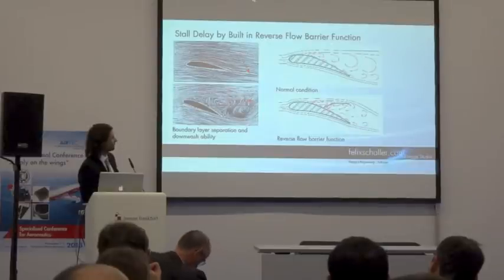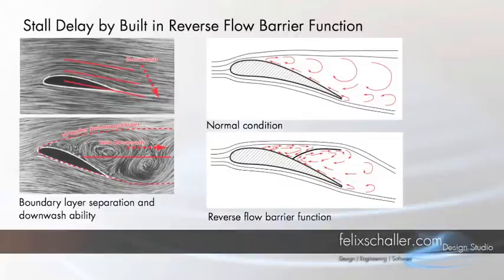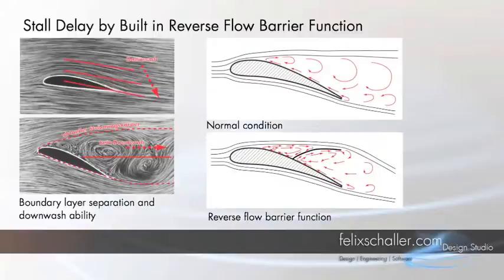With certain reverse flow barrier functions applied — this is now shown on one flap, which was already researched in the 19th century in Berlin — they did research with reverse flow flaps and found results increasing the lift in the critical area by 20%.